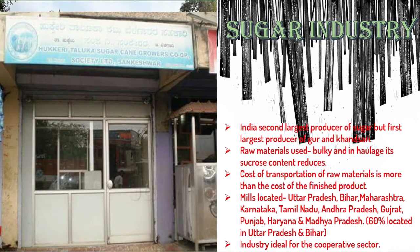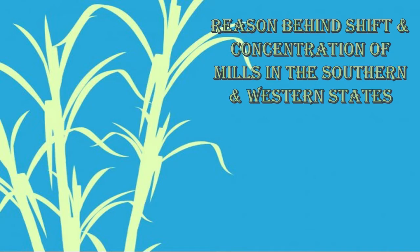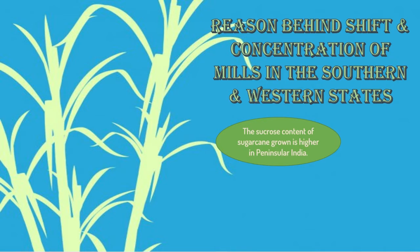These industries were mostly located in the northern states, but now there is a shift of concentration of mills from the northern states to the south and western states. The sucrose content of sugarcane grown in peninsular India is higher, meaning more sugar can be extracted from the same amount of sugarcane — this is the first reason for the concentration of mills in southern and western states.